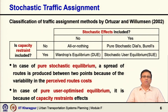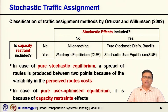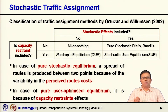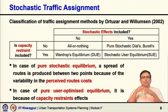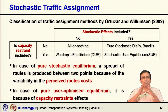We can look at a useful classification. Is capacity restraint included — yes or no? Is stochastic effect included — yes or no? If we are not considering capacity and not considering stochastic effect, it is all-or-nothing: everybody takes the shortest path. There is perfect information, no variation in perceived travel time, no capacity restraint — so everybody goes along just one shortest path and no flow takes place on any other path.